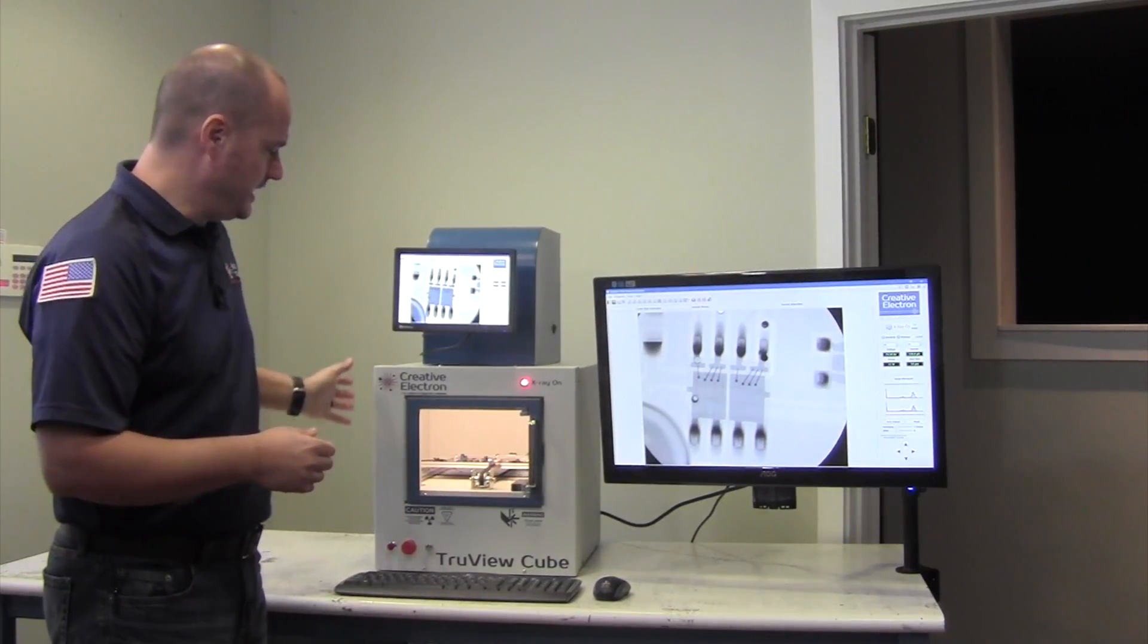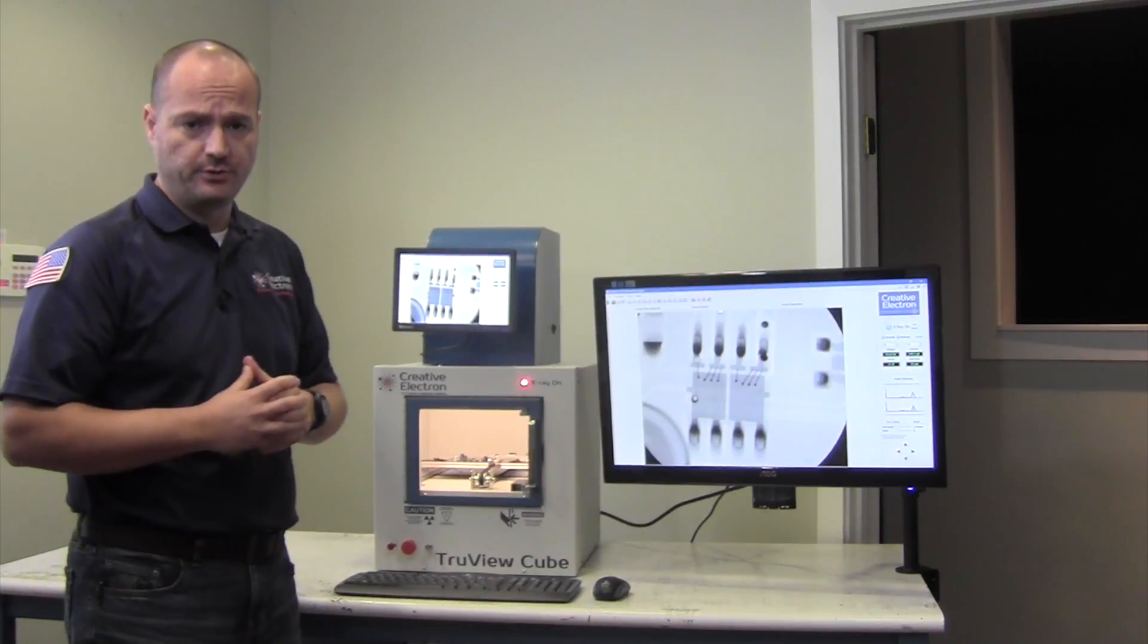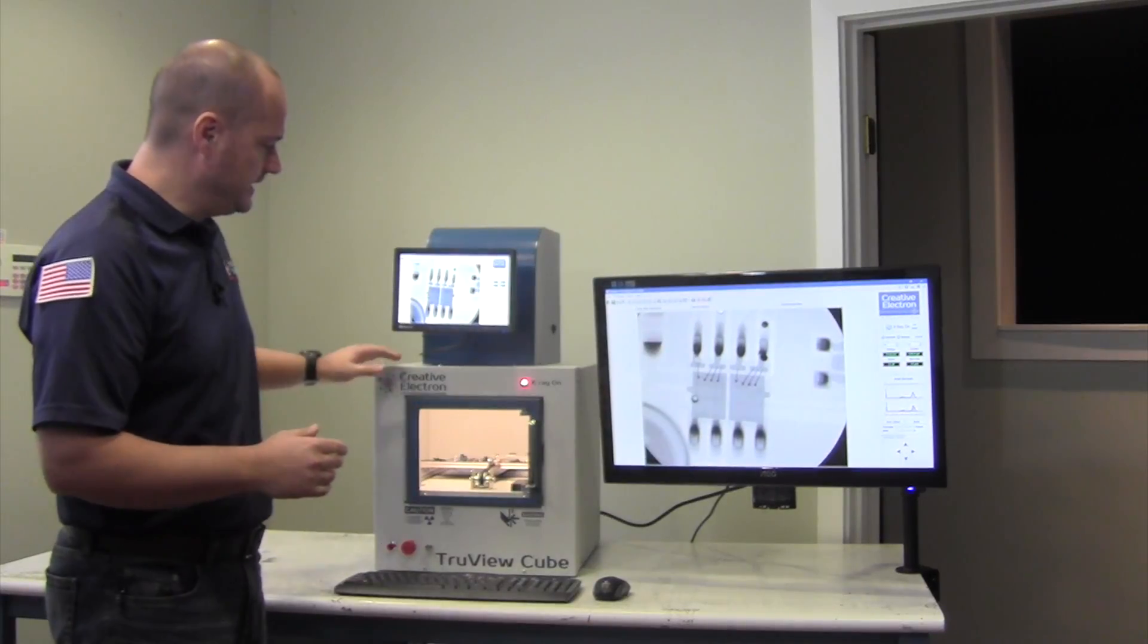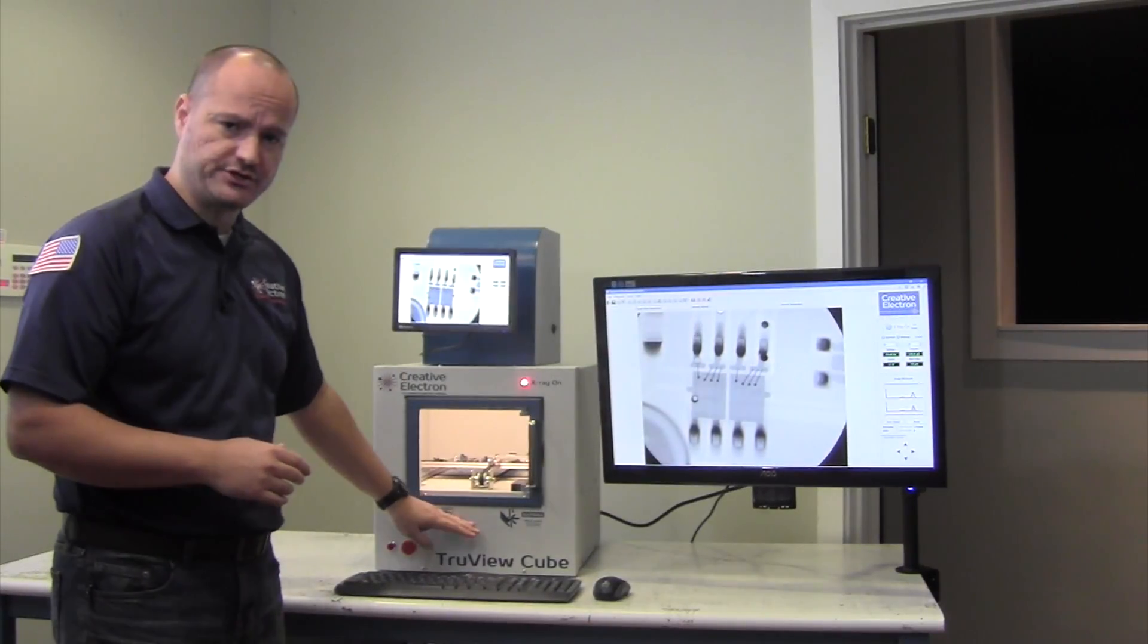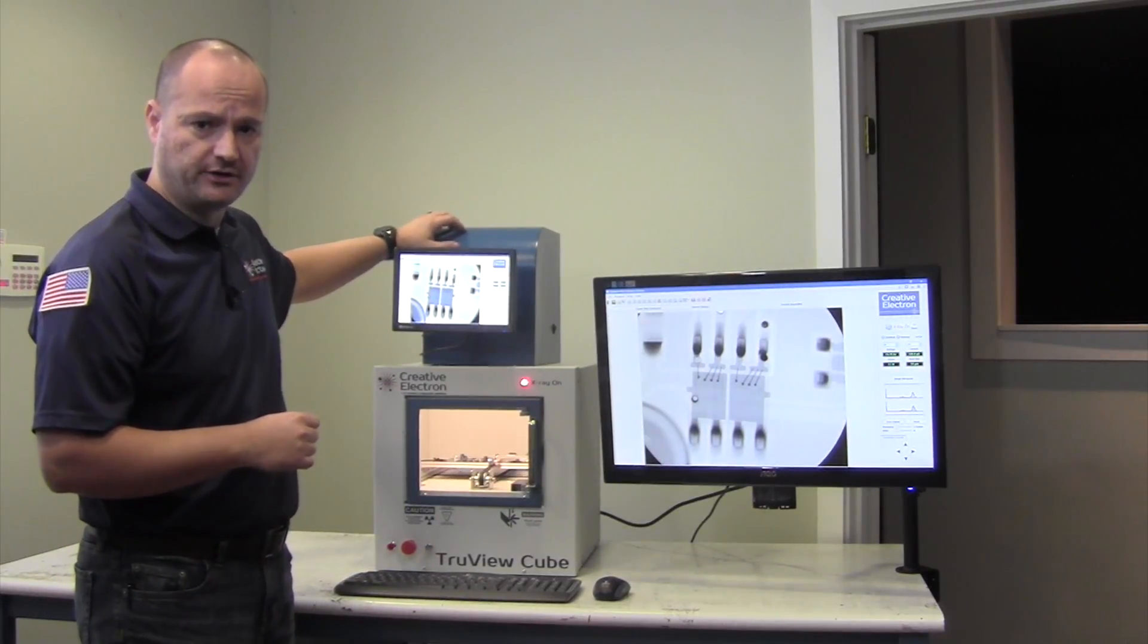As you know, the Cube is a 16 by 16 inch cabinet that comes in two different configurations. The TrueView A is what you see here with the X-ray source on the bottom and an image intensifier 4 inch, 2 inch image intensifier on the top.